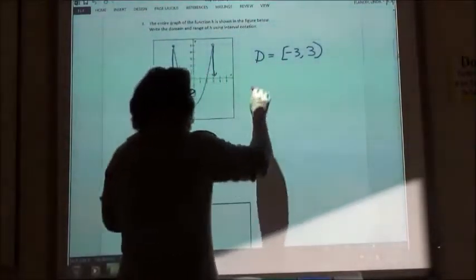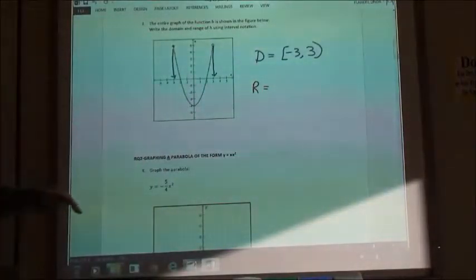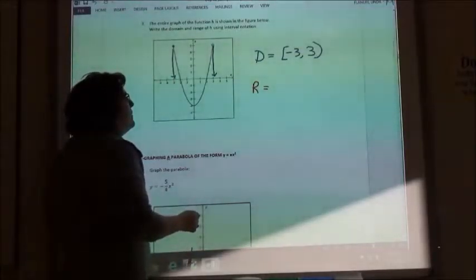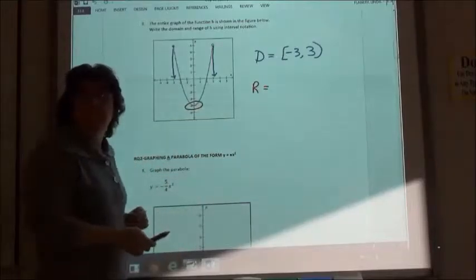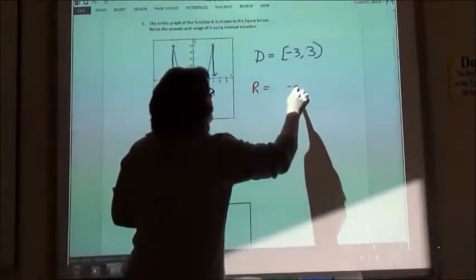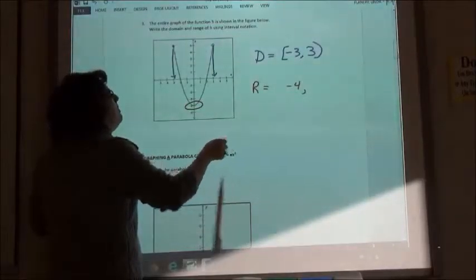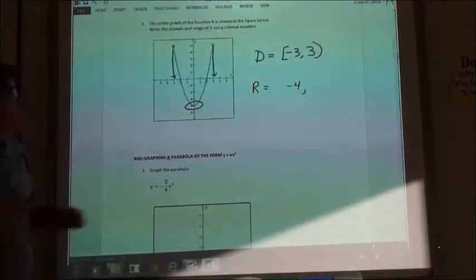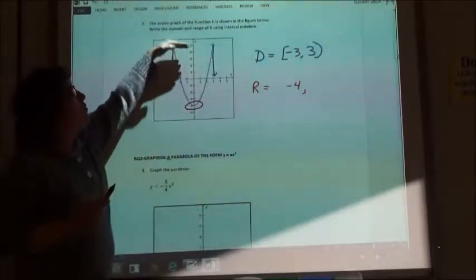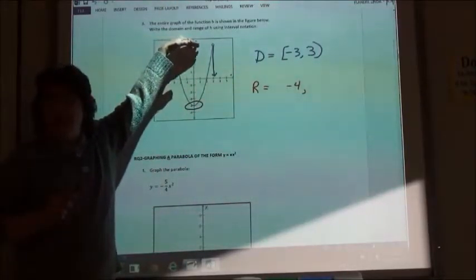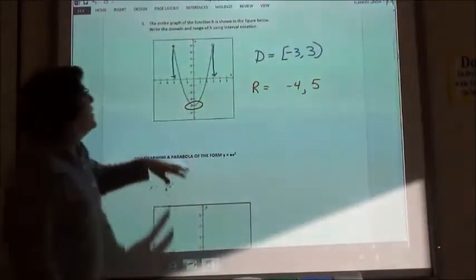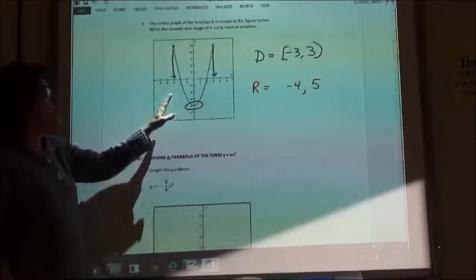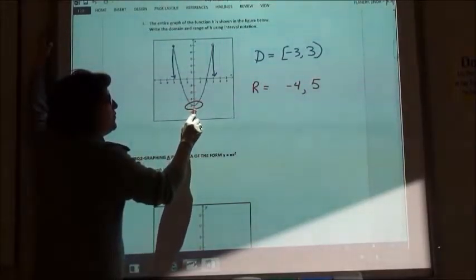Now the range. The range, my bottom point to my top point. So the bottom is at negative 4 and the top is at negative 4. Negative 4 to 5, goes all the way up to 5. Now, the end marks for those. The negative 4 is in the middle of the graph.